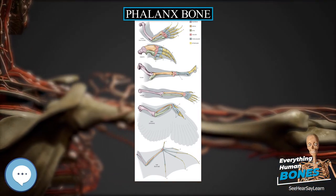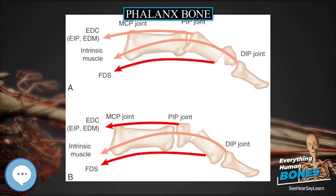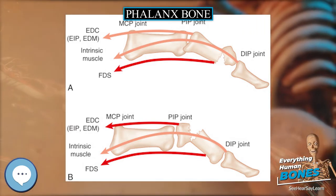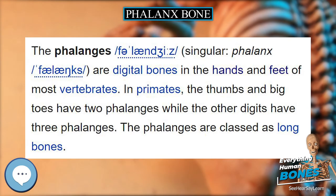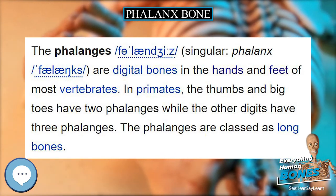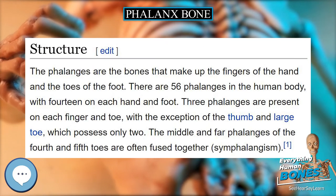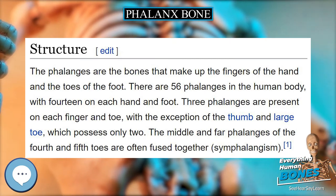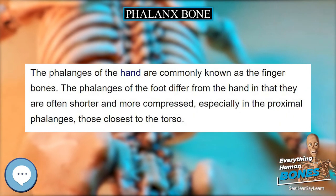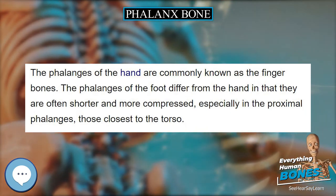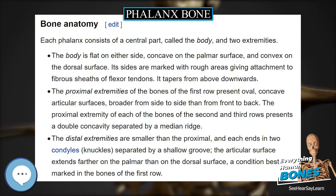In vertebrates, proximal phalanges have a similar placement in the corresponding limbs, be they paw, wing, or fin. In many species, they are the longest and thickest phalanx. The middle phalanx also occupies a corresponding place in their limbs, whether they be paw, wing, hoof, or fin. The distal phalanges are cone-shaped in most mammals, including most primates, but relatively wide and flat in humans.